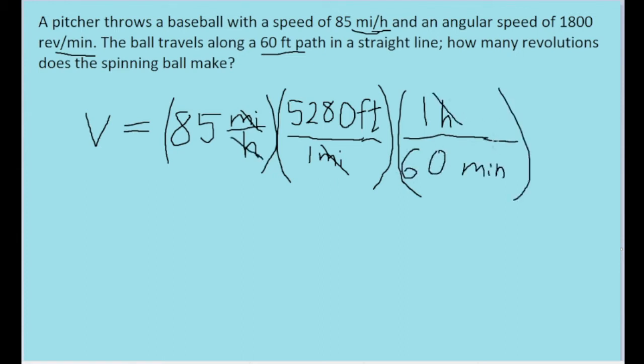And so, of course, the hours now cancel out. So if we were to put this into a calculator, then we will find that this speed is equal to 7,480 feet per minute.